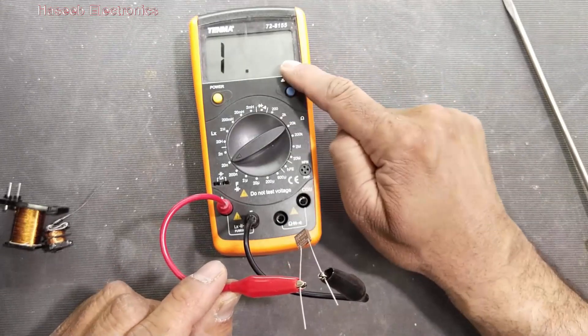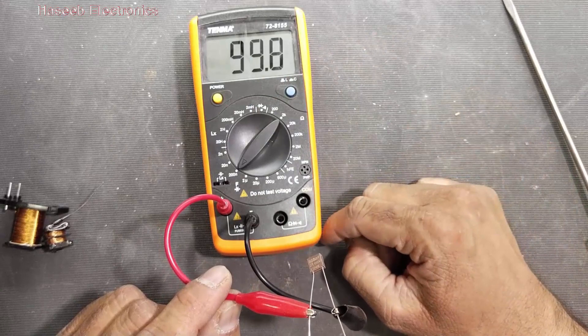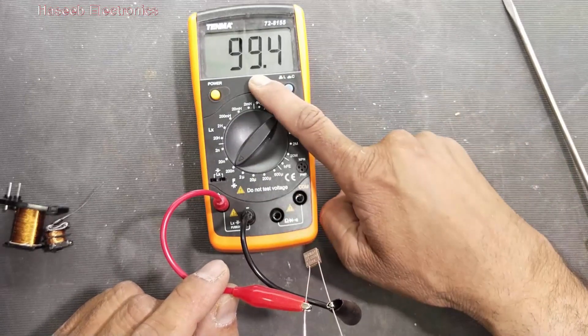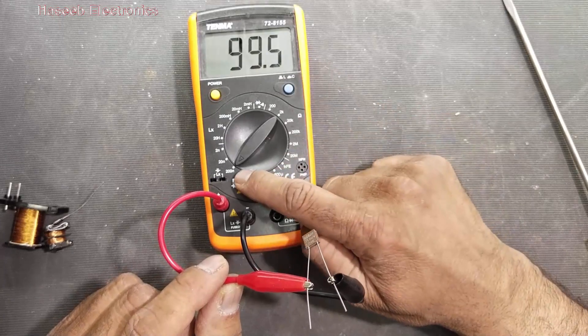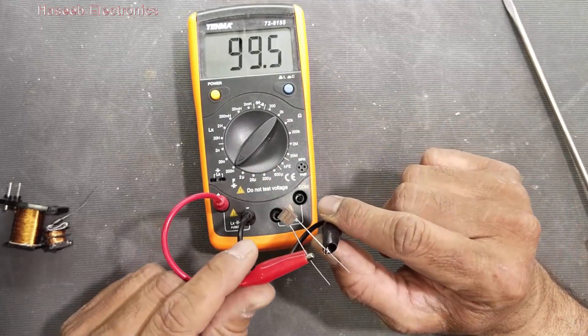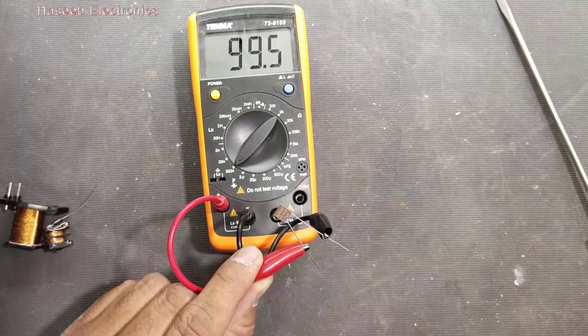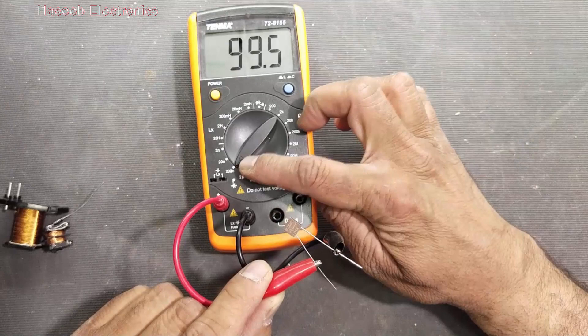At the same test terminals, it is giving open. Then we have to change the next reading. It is 99.9, 99.5 nano. It is 100 nano capacitor, 104, so it is 99.5 nanofarad.